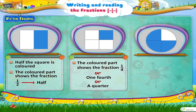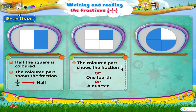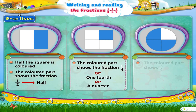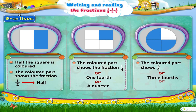Now look at this circle. It has been divided into four equal parts, out of which three parts are coloured. So the fraction shown by the coloured part is 3 upon 4, or 3 fourths, or 3 quarters.